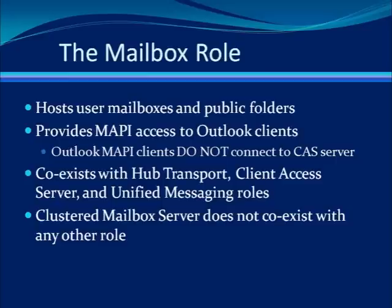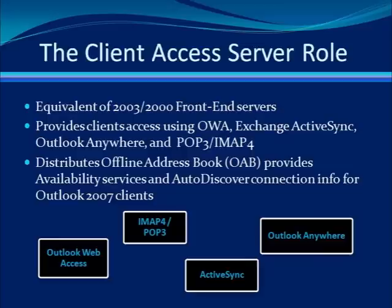However, if you install a clustered active or passive mailbox server, then you cannot have it coexist with any other role. The next server role is the client access server. This role is similar to the front-end server for Exchange 2000 or 2003, and it provides connections to your mailboxes through a variety of different methods. You might use Outlook Web Access to connect through a browser, ActiveSync for your mobile device, or Outlook Anywhere to connect to your mail at work without a VPN. It also provides POP and IMAP support, free busy data through the availability service, and supports the auto-discover services.